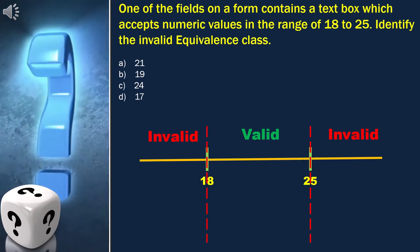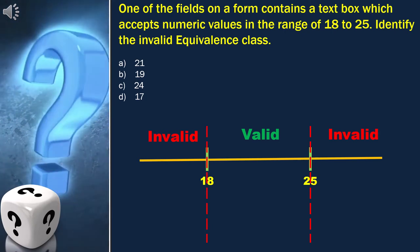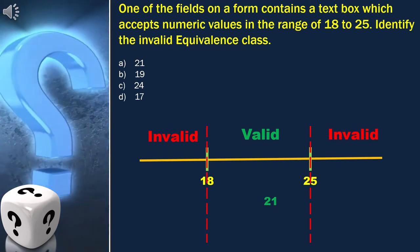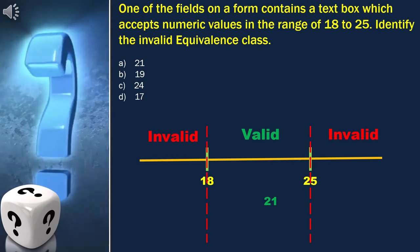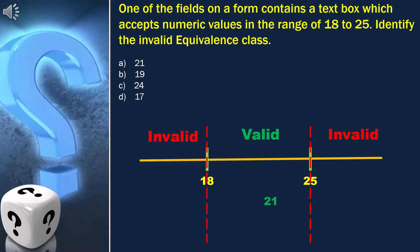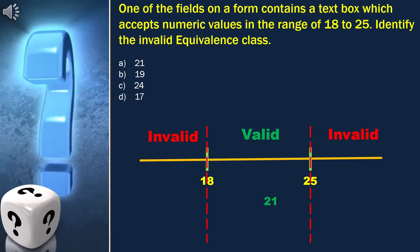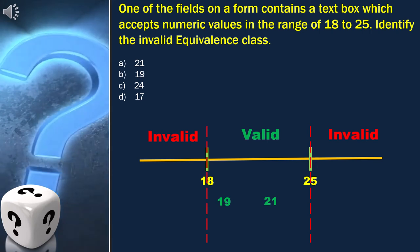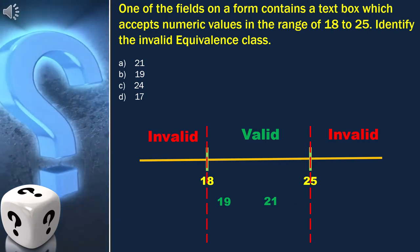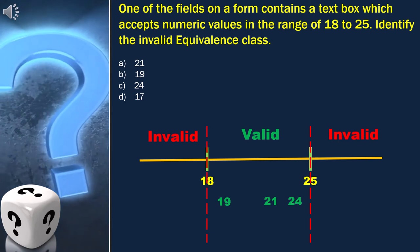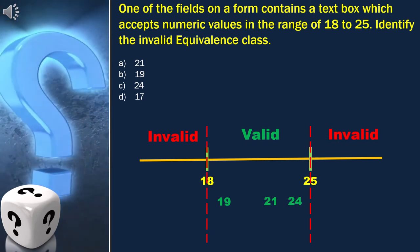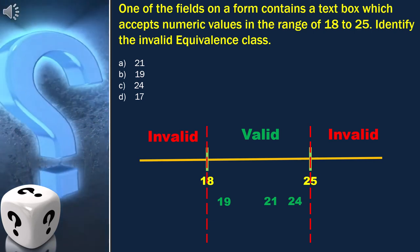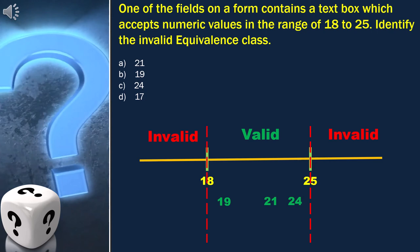Now let's look into the options. The first option is 21, and we can place 21 here which is a valid value. The next option is 19, and we can place it here which is also a valid value. Next option is 24, and we can place it here which is also a valid value. So, 21, 19, and 24 are the valid values.